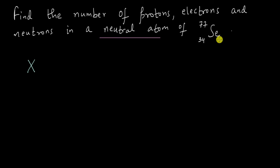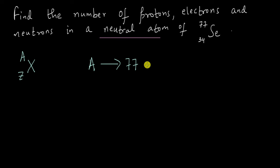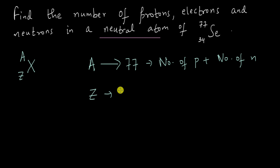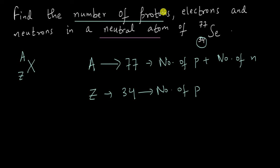In general, our element symbol will have the chemical symbol — here it is selenium — with the mass number on the upper left side and the atomic number on the lower left side. So this means the mass number A for this atom is 77, which is the number of protons plus the number of neutrons — the heavy bits of an atom. We are also given Z, the atomic number, which is 34 on the lower left side. This is the number of protons. So we already have the number of protons: 34.